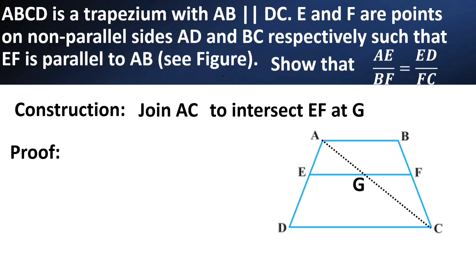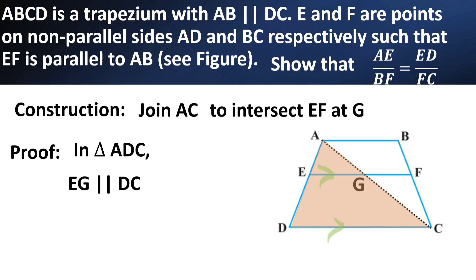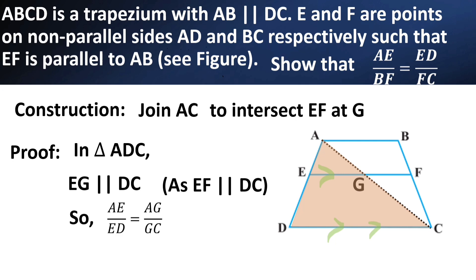Now we have got two triangles: one is ADC, another one is ABC. In triangle ADC, observe that EG is parallel to CD — because EF is parallel to CD, it is given. So by using the Basic Proportionality Theorem, we can say that AE/ED is equal to AG/GC.